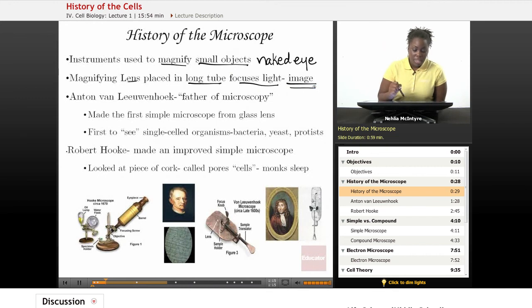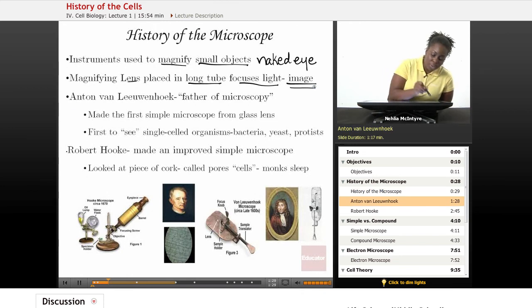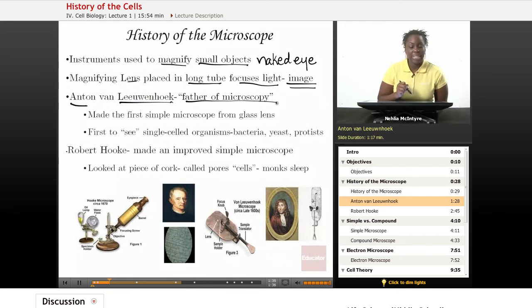Now, there were two scientists that helped to usher in the study of microscopy or microscopic organisms or microscopic objects. The first one was Anton van Leeuwenhoek, and he was considered to be the father of microscopy because he invented the very first very simple microscope.